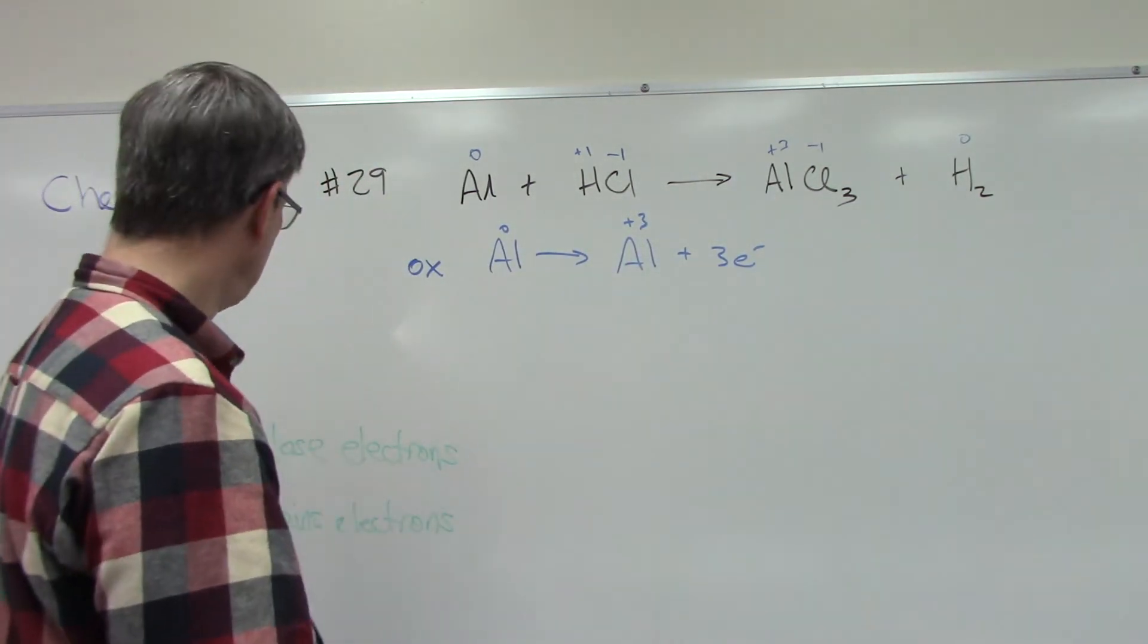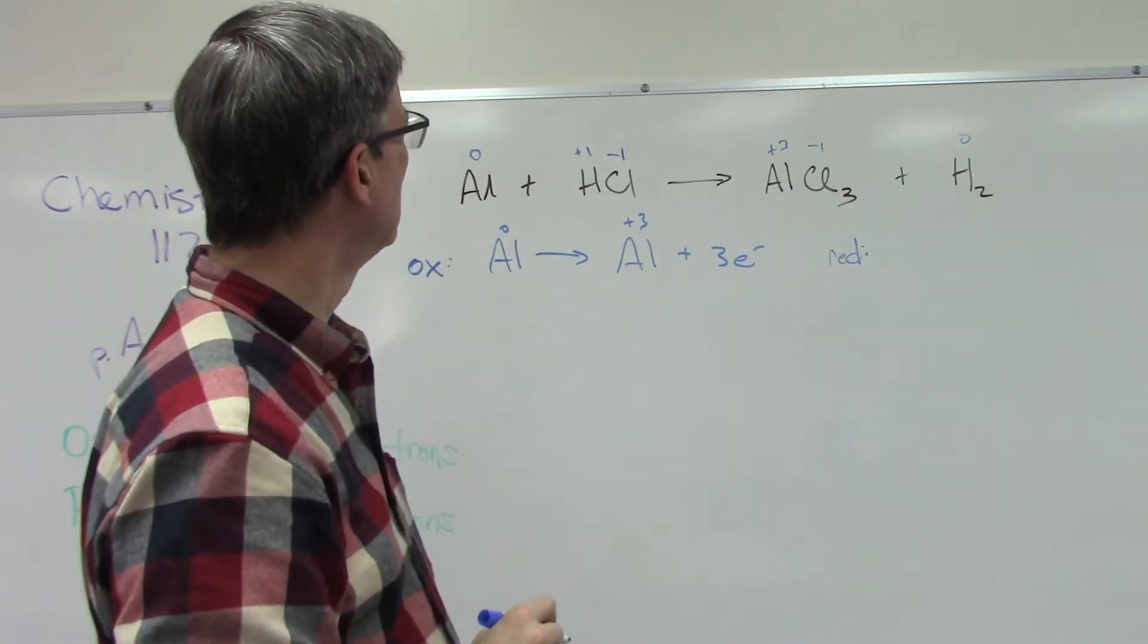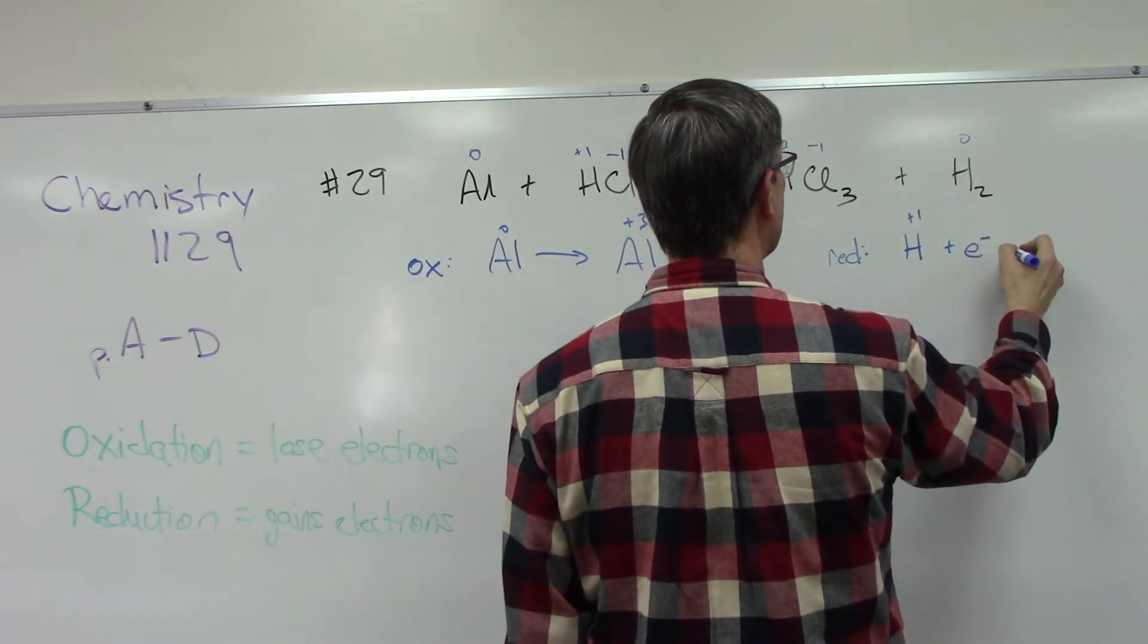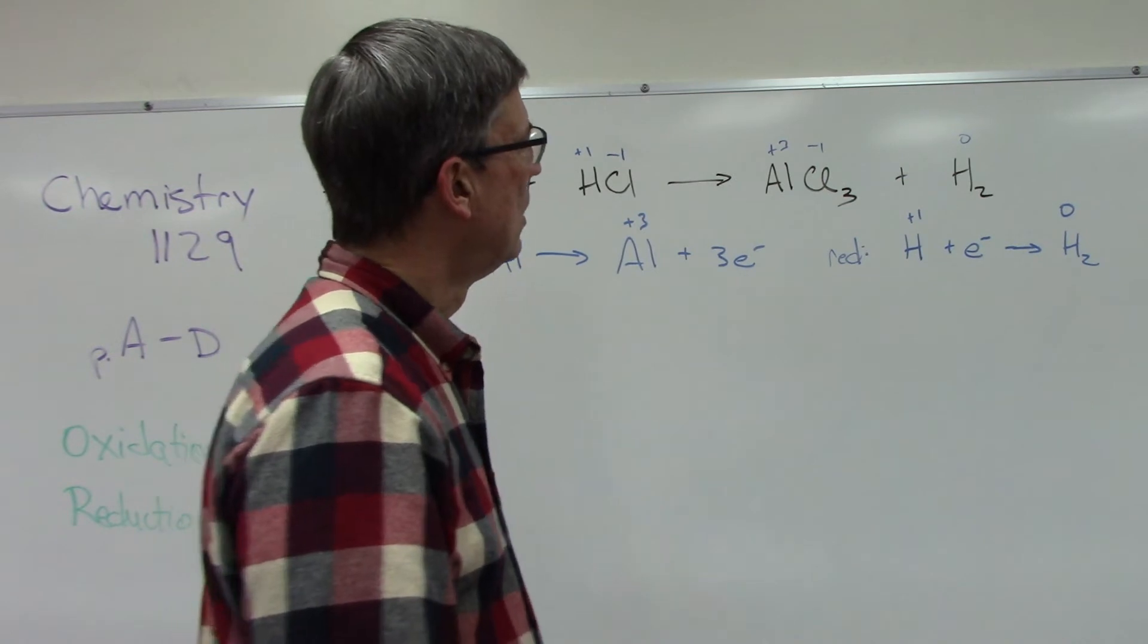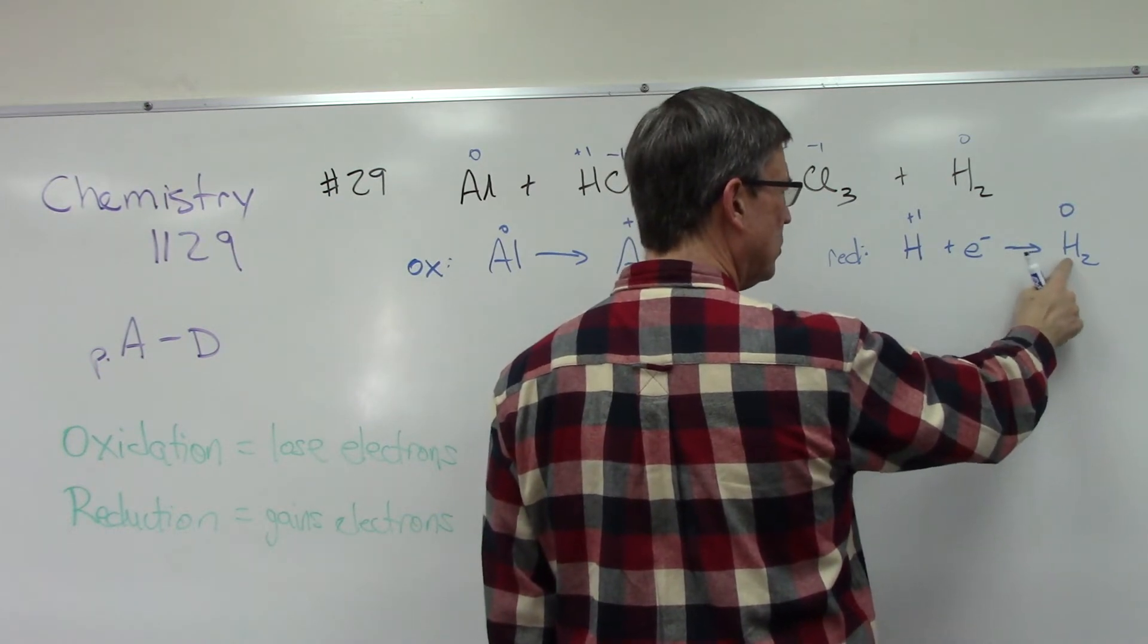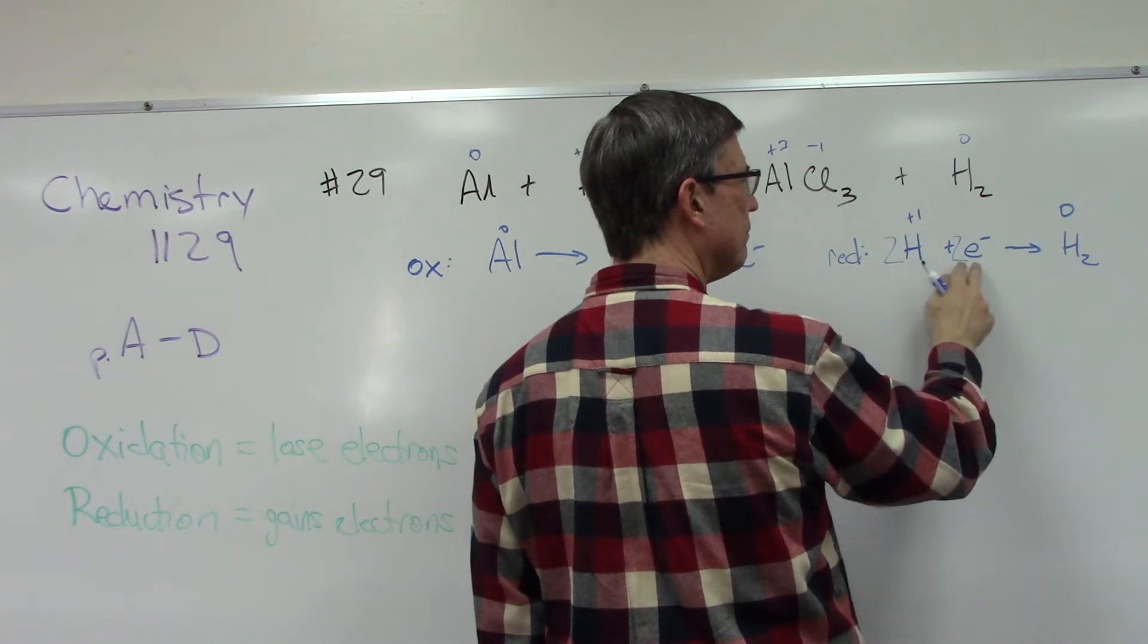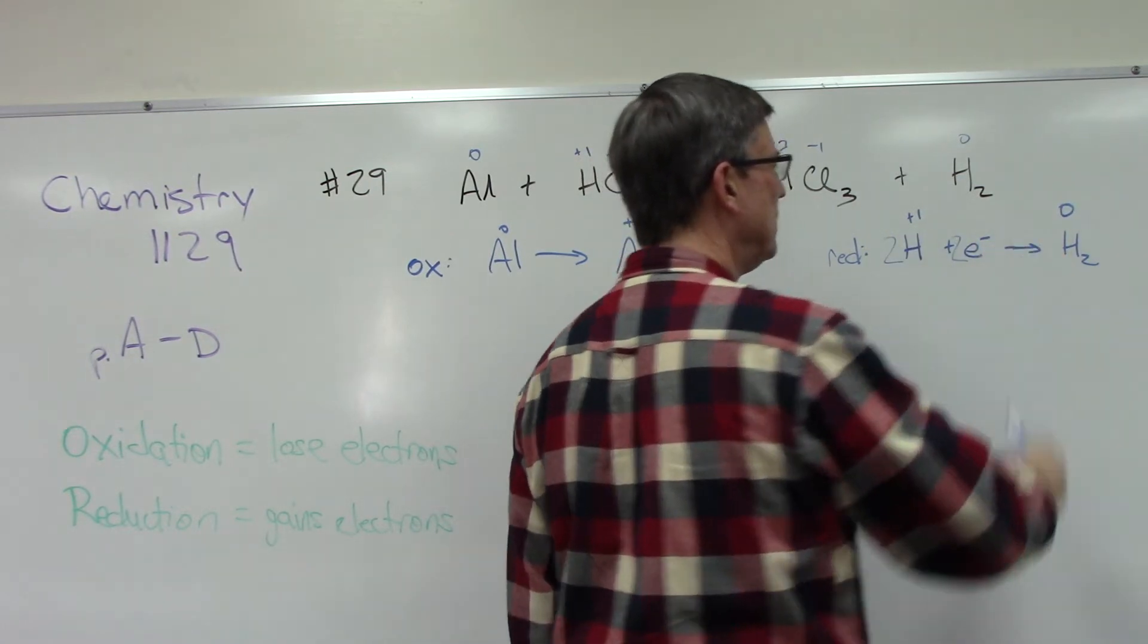Now we're going to do the reduction equation. That would be hydrogen. Hydrogen is positive one, and then it must be gaining one electron to become H2 zero. Actually, what happens here is because I have two hydrogens, it's H2, then I need to put a two in front of here and a two in front of here. So I have two hydrogens, each gaining an electron, so that the positive one plus the negative charge ends up being zero.